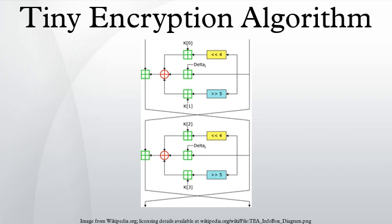TEA is also susceptible to a related key attack which requires 2^23 chosen plaintexts under a related key pair, with 2^32 time complexity. Because of these weaknesses, the XTEA cipher was designed.